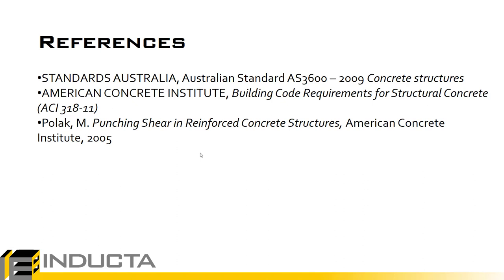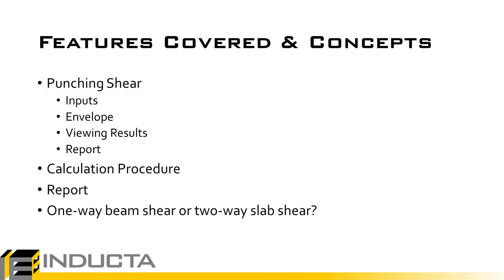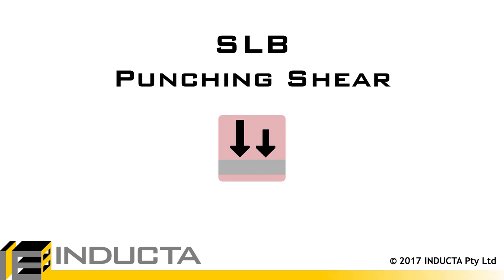In summary, we looked at how to display the punching shear results in SLB — simply go to Results, Punching Shear — and we also looked in more detail at the calculation procedure within the SLB program. We need to understand what the program is doing and its limitations so that we know when the scope of the program doesn't cover our particular case. Thank you for watching this video.